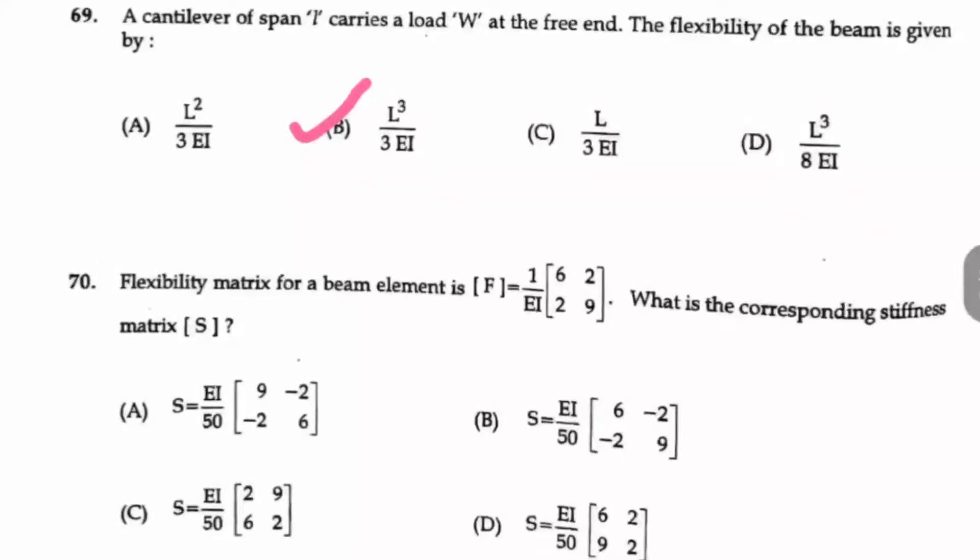Next we have to see the matrix conversion. For converting it into a stiffness matrix, you should exchange the first number and fourth number of the matrix—that is, 6 and 9 have to be exchanged—and the remaining, that is the second element and third element, have to be multiplied by minus 1. This is the normal rule for converting it, so option A will be the right answer.